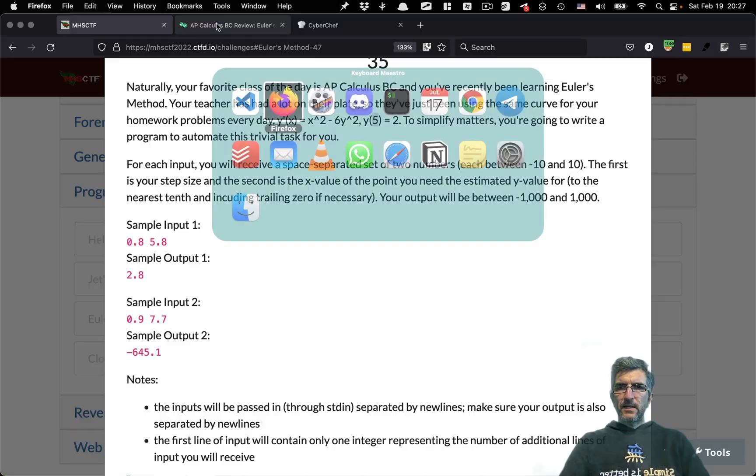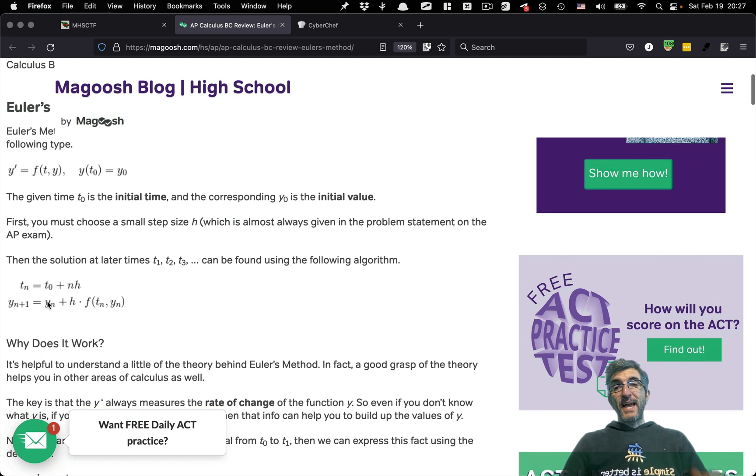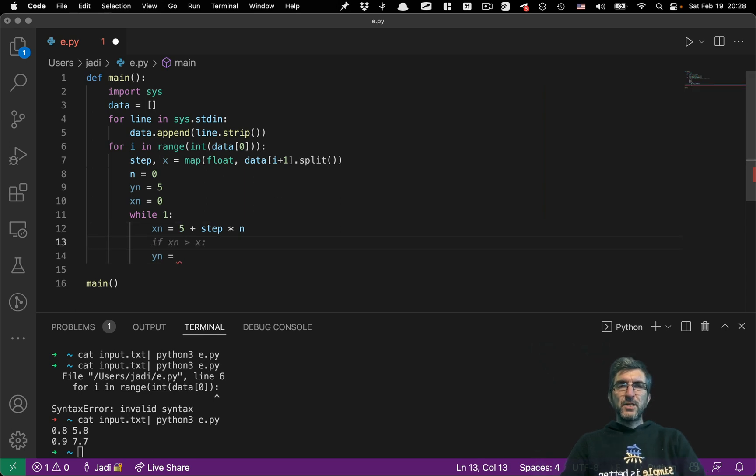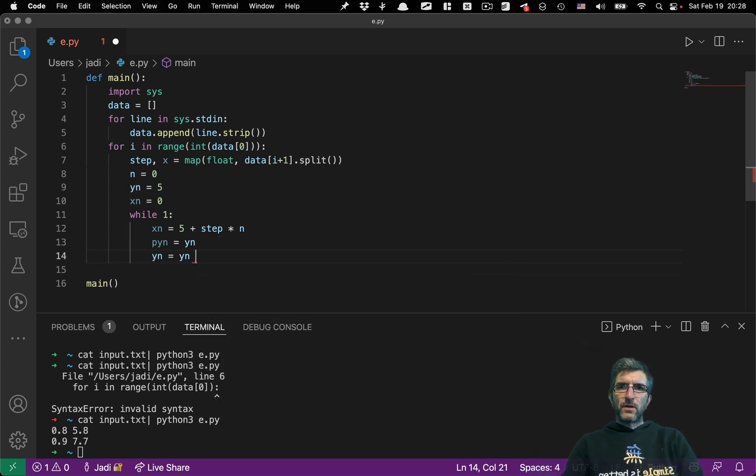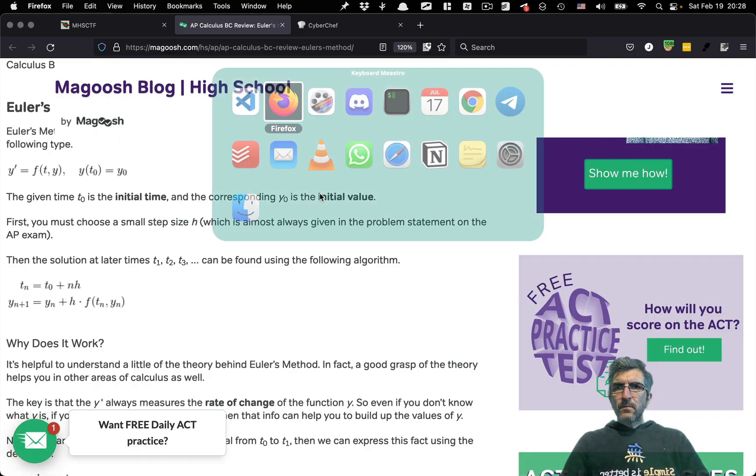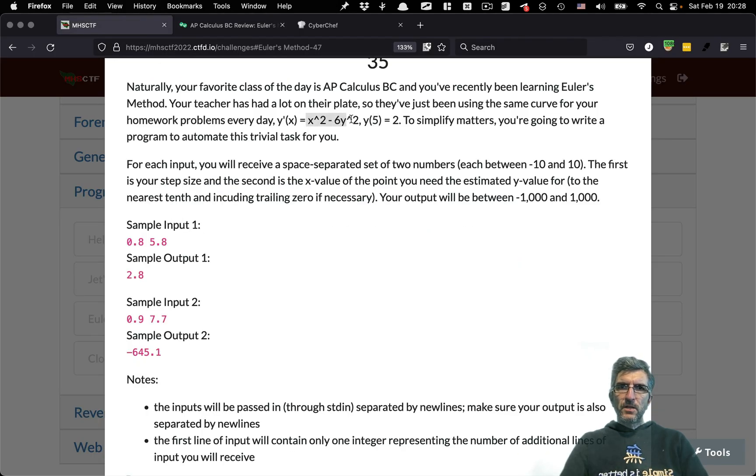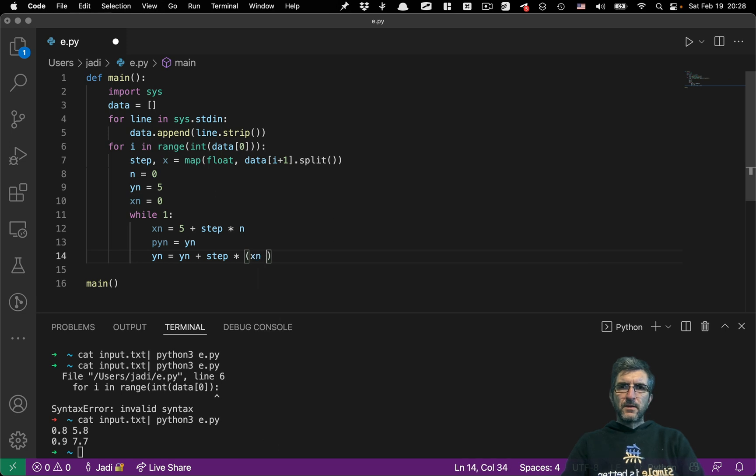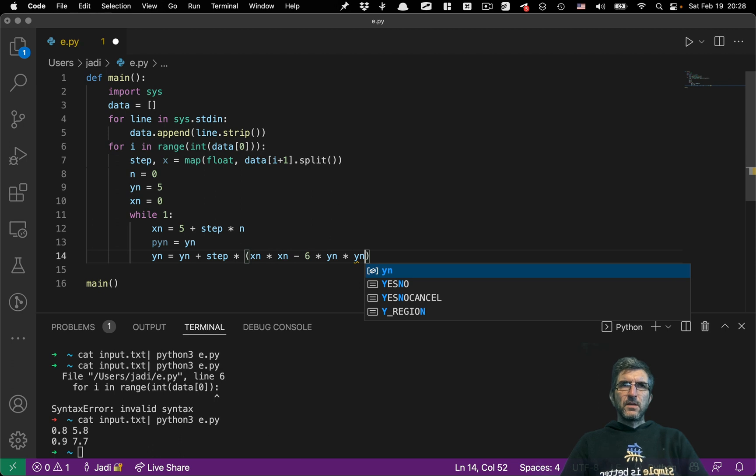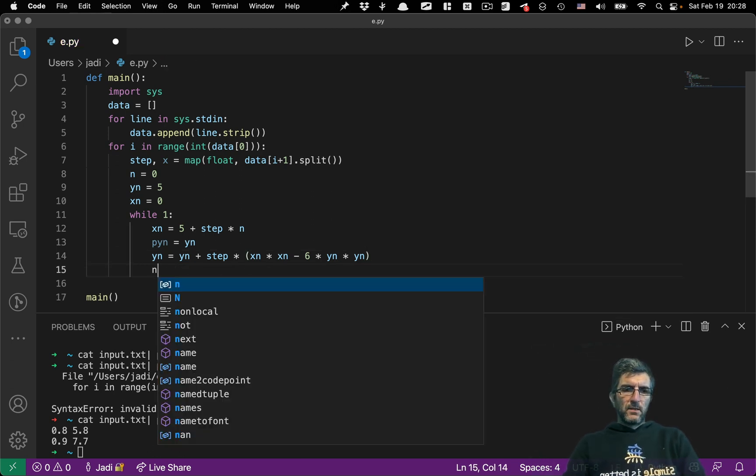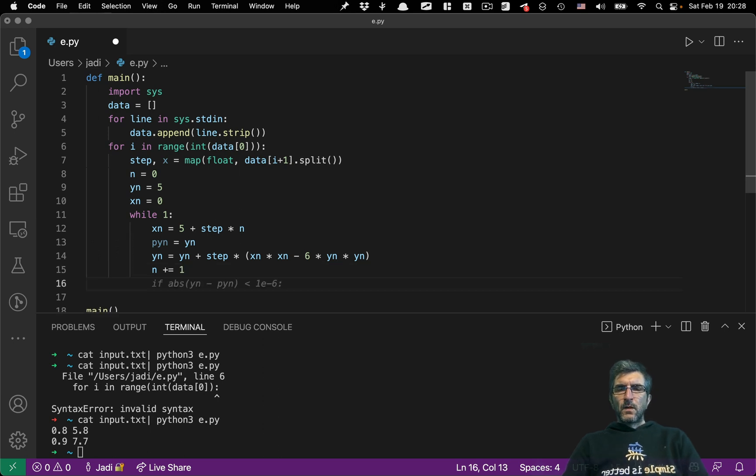Here h is the step. So that will be 5 plus step times n. And yn is, this is the formula: yn the previous one plus h and the function. So I have to keep the previous one. Previous yn is yn. Then I will update it. yn plus step times the formula which is provided here. x to the power of 2. So that will be xn times xn minus 6 times yn. And then add 1 to n. This should be it.